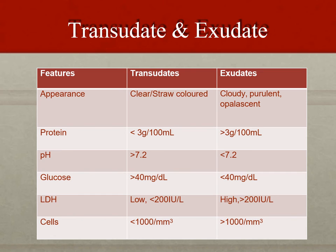Comparing transudative and exudative effusions: protein levels are lower in transudative and higher in exudative effusions. pH is more than 7.2 in transudative and less than 7.2 in exudative effusions — exudative effusions are more acidic. Glucose levels are more than 40 mg/dL in transudative and less than 40 in exudative. LDH is less than 200 in transudative and high in exudative fluid. Cell count is less than 1,000 in transudative and more than 1,000 in exudative.